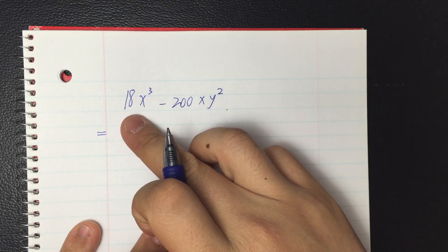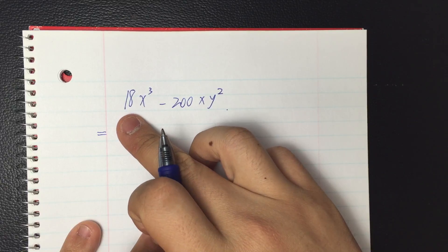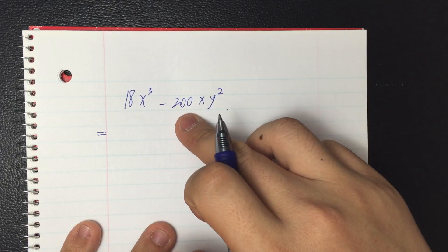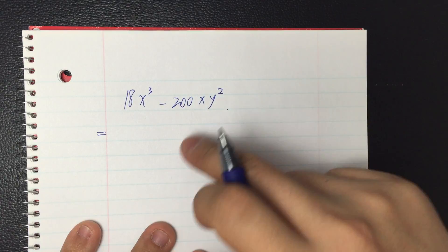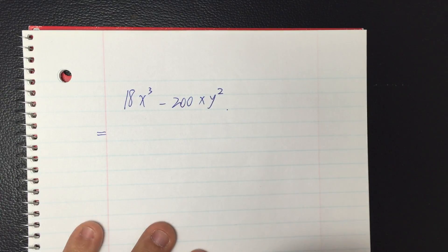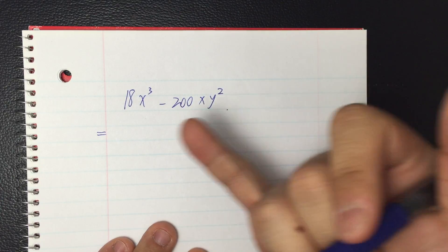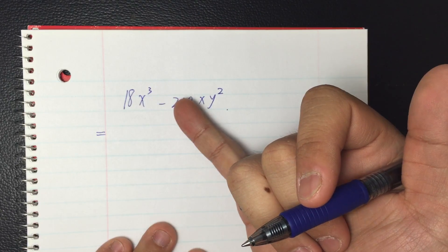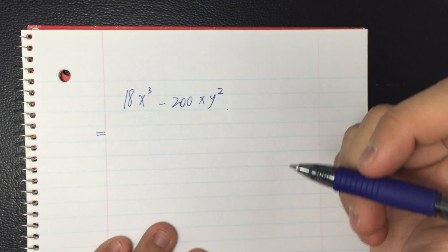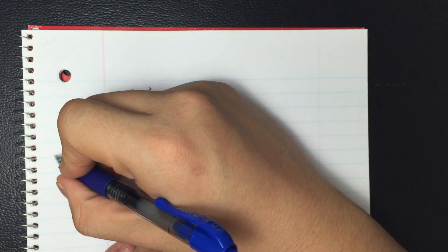We're observing the terms 18 and 200, x to the third and x, and y squared. First of all, 18 and 200 are even numbers, so we try to factor them.